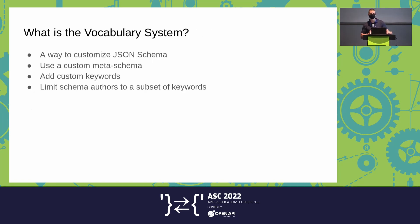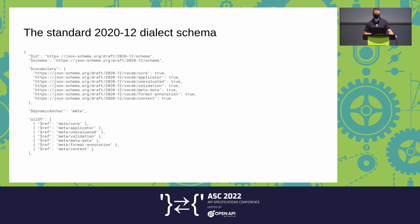So here's what the standard JSON Schema 2020-12 dialect looks like. First it has an identifier — this is what will be used in the dollar-schema keyword to declare that a schema uses this dialect. The vocabulary keyword is what we use to describe what the dialect is. There are a bunch of standard vocabularies used in this dialect and those are the ones that are included.